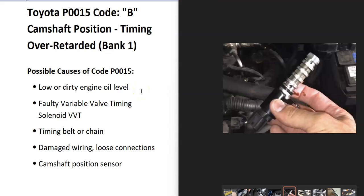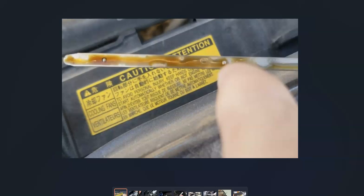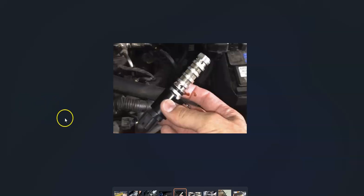Some possible causes include low or dirty engine oil, a faulty variable valve timing solenoid, the timing belt or timing chain, wiring issues like a loose connection or an open or short, and possibly a camshaft position sensor. A common cause is the variable valve timing solenoid, since oil flows through it. So the first thing you want to do is check the engine oil — be sure it's not low and not super dirty, because low or dirty engine oil could clog up that solenoid and cause this code.